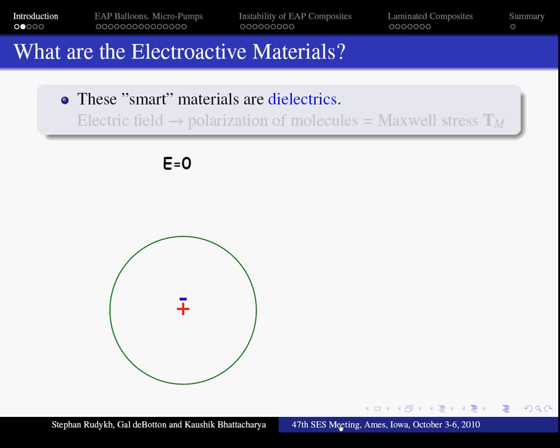Next, they are dielectrics. Electrons in dielectrics are bound to the atoms and to the molecules, unlike conductors where they can freely move.